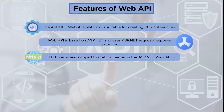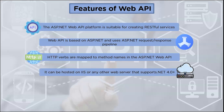HTTP — Hypertext Transfer Protocol — verbs are mapped to method names in the ASP.NET Web API. Web API can be hosted on IIS or any other web server that supports .NET version 4.0 and above.